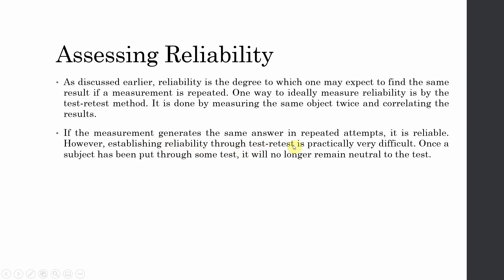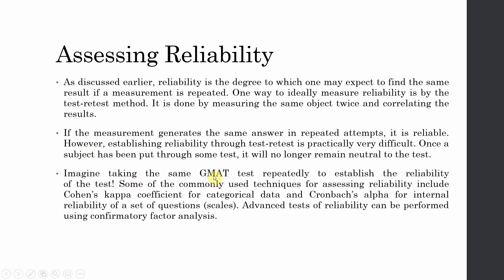However, establishing reliability through test-retest is practically very difficult. You cannot ask the same subjects to join your survey again — for example, if your survey has 400 respondents, you cannot ask them to fill the same questionnaire a second time. Furthermore, once a subject has been put through a test, they will no longer remain neutral to it; the next time they may have a certain amount of bias. Imagine taking the same GMAT test repeatedly just to establish the reliability of the test.